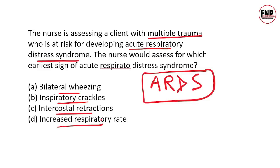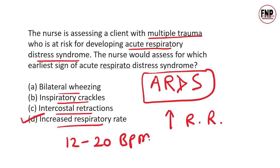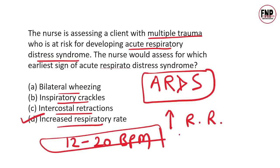Acute respiratory distress syndrome, trauma आदि conditions के बाद होने वाला severe lung से related condition है, जिसके बाद client को respiration में दिक्कत होने लगती है। Respiration से related problems होने पर सबसे पहले हमारी body respiration rate को बढ़ाती है, ताकि body में oxygen का level maintain किया जा सके। ARDS की शुरुवात होते ही, client का respiration rate बढ़ जाएगा। Normal respiration rate 12 से 20 breaths per minute होता है। Answer is Option D: Increased respiratory rate.